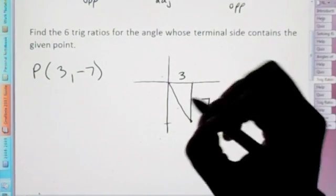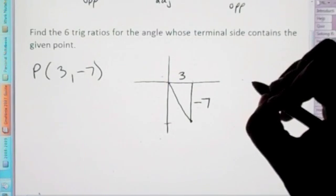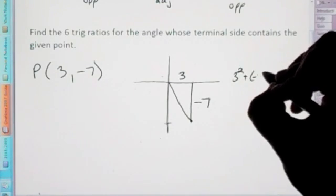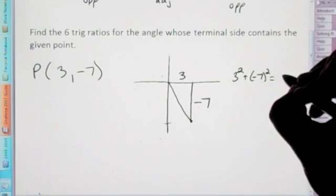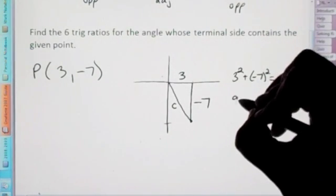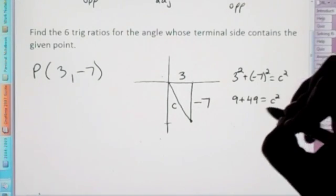So we need to find our hypotenuse in order to fill out all the trig functions or trig ratios. So we do the Pythagorean theorem. We have 3 squared plus negative 7 squared equals c squared.